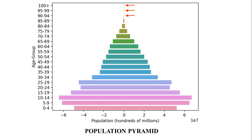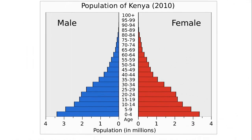Now let us study the different shapes of the population pyramid in reference to Kenya, India and Japan. The population pyramid of Kenya is broad at the base and narrow towards the top. This shows high birth and death rates. This type of pyramid shows that many babies are born but they die in their infancy. In such populations, very few people become adults and reach old age.